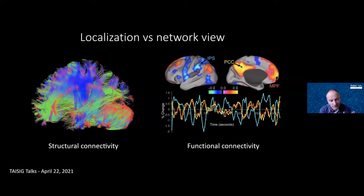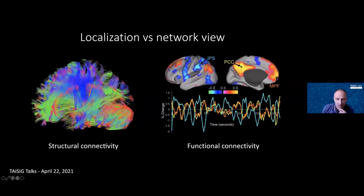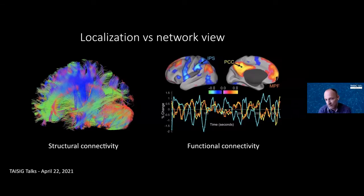Functional connectivity allows us to discover functional networks. Here we see two different networks: the default mode network in yellow-reds and the attention network in blue. These two networks are anti-correlated — the default mode network is mostly active during rest, whereas the attention network is mainly active when performing a task.